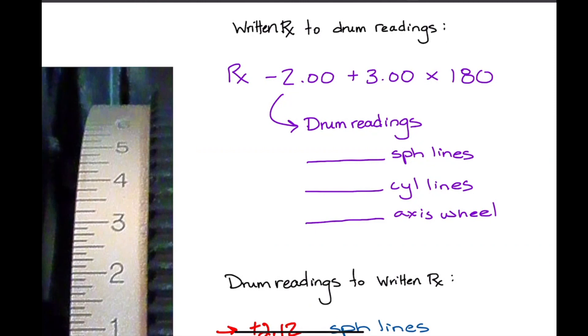This one might be helpful whenever you are verifying a pair of glasses, because you look down and you're expecting, if it's a minus 2, then when you put it at the sphere you're expecting a minus 2. And then when the cylinder takes place, you're expecting what you're expecting. So if this was my prescription, what sphere lines and cylinder lines and axis wheel readings would I be expecting?